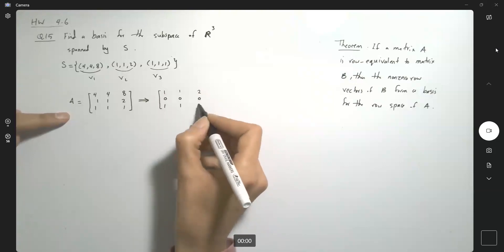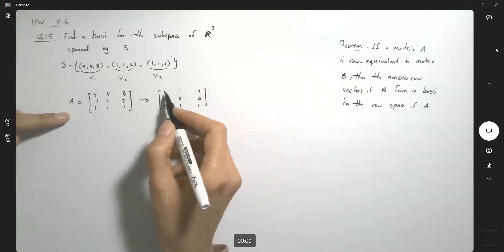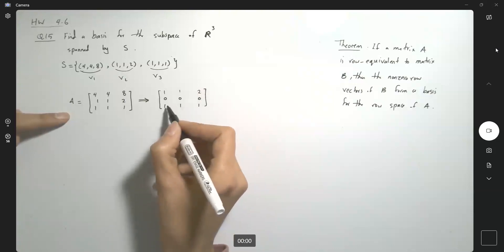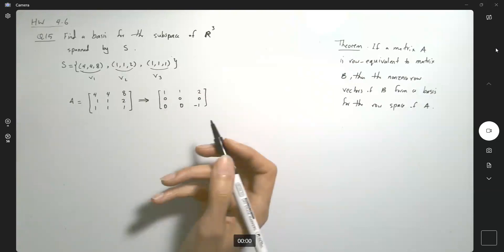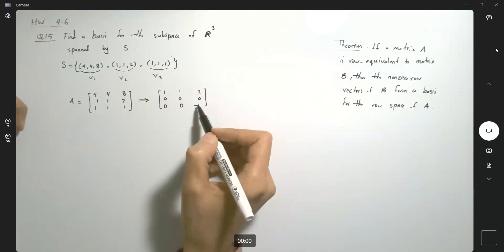So we ended up having at least one zero row. This is just (1, 1, 1). So if I multiply the first row by negative one and add it here, you get (0, 0, -1). So we only have two non-zero vectors.